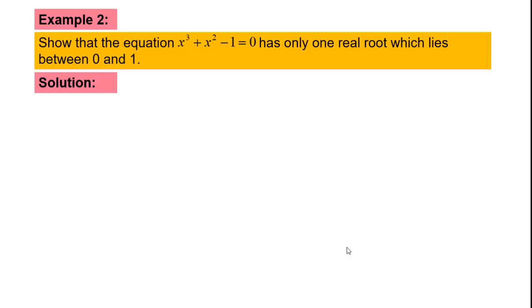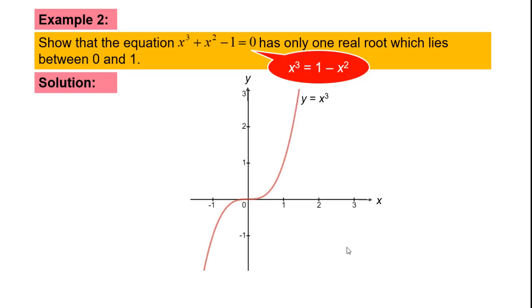Example 2: show that the equation has only one real root which lies between 0 and 1. To show this, we use the graphical method. Since it is hard to sketch the given cubic function directly, we rewrite the equation as x cubed equals 1 minus x squared. Sketching y equals x cubed — which passes through the origin — and y equals 1 minus x squared — with x-intercepts at x equals 1 and x equals negative 1 — the graph shows there is only one root between x equals 0 and x equals 1.